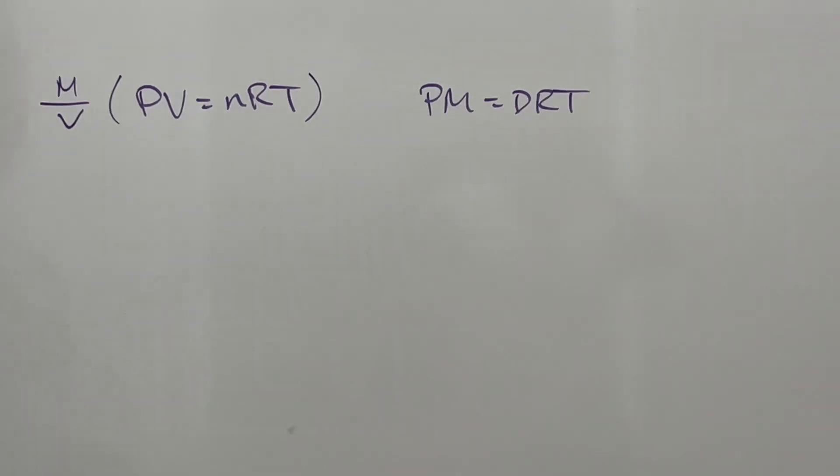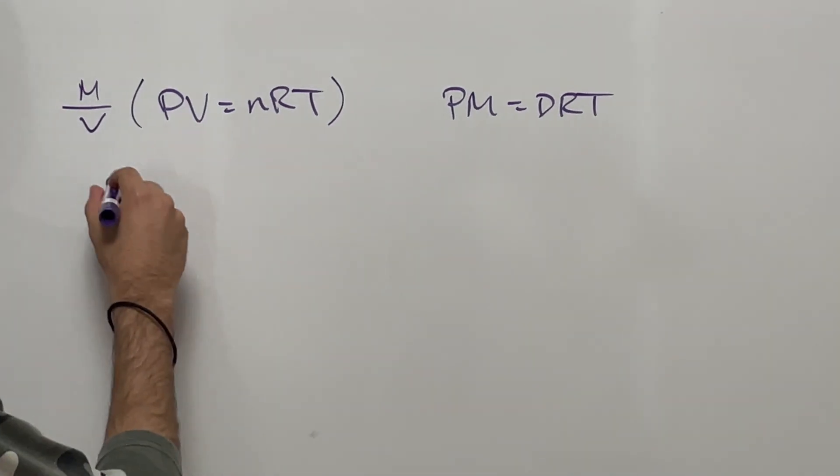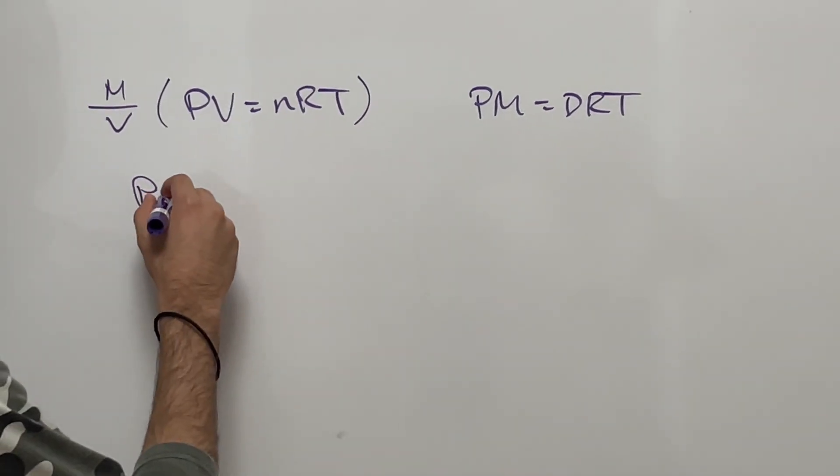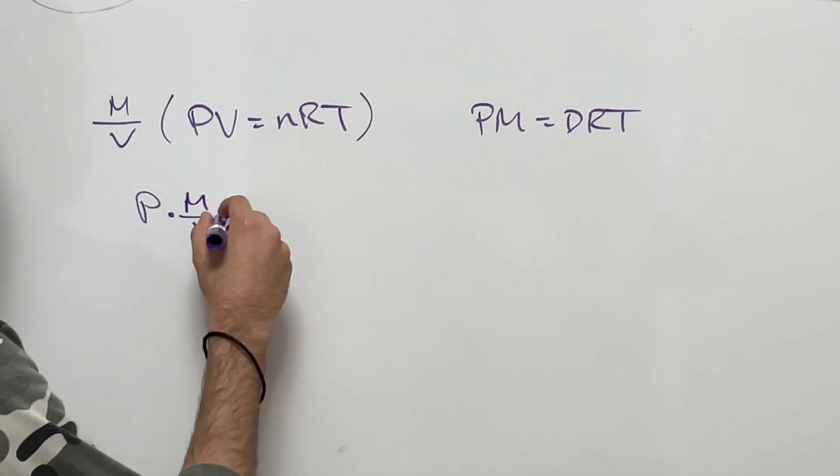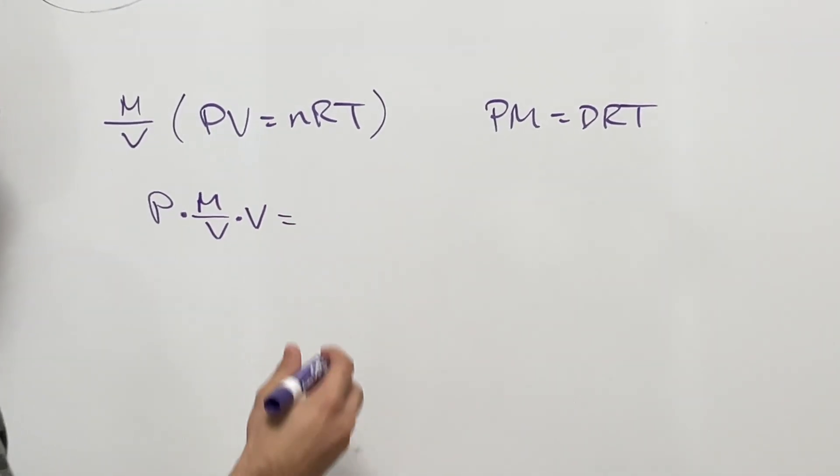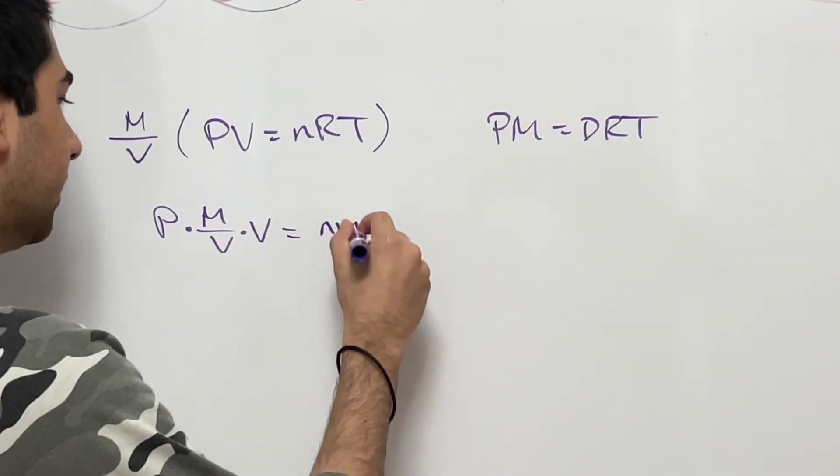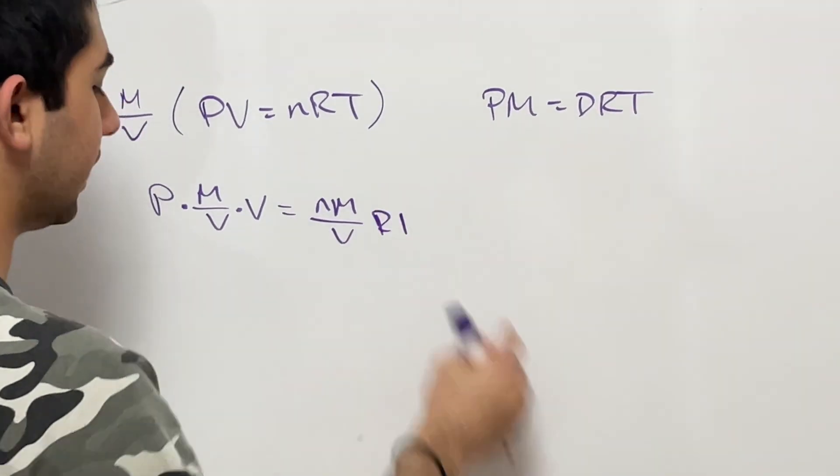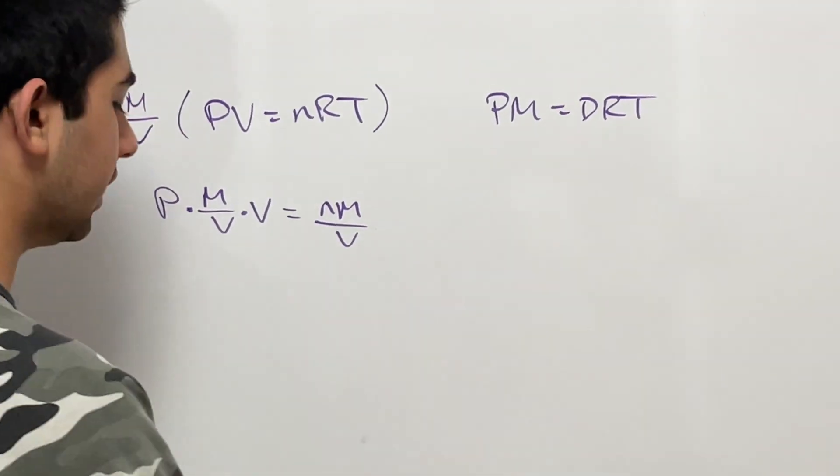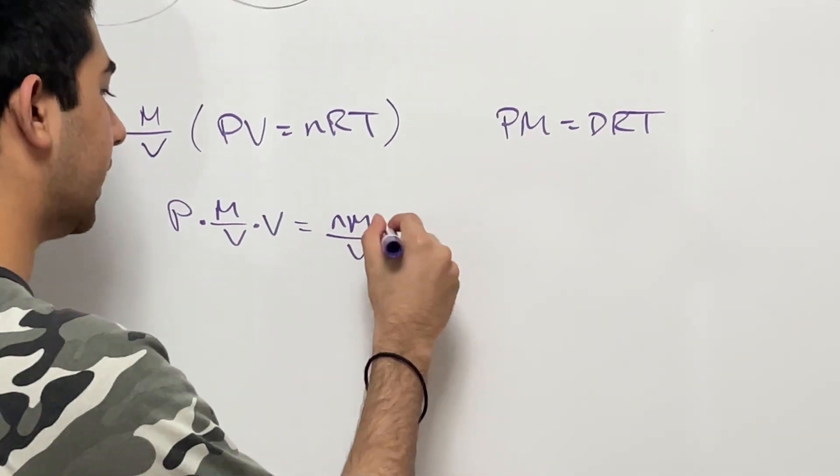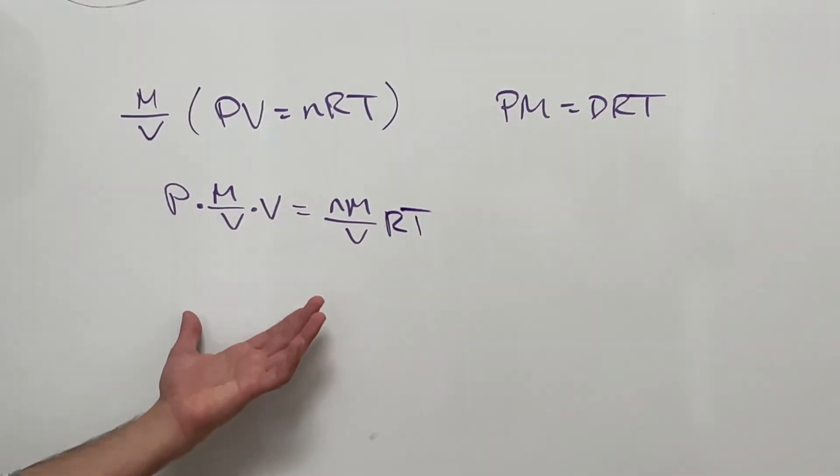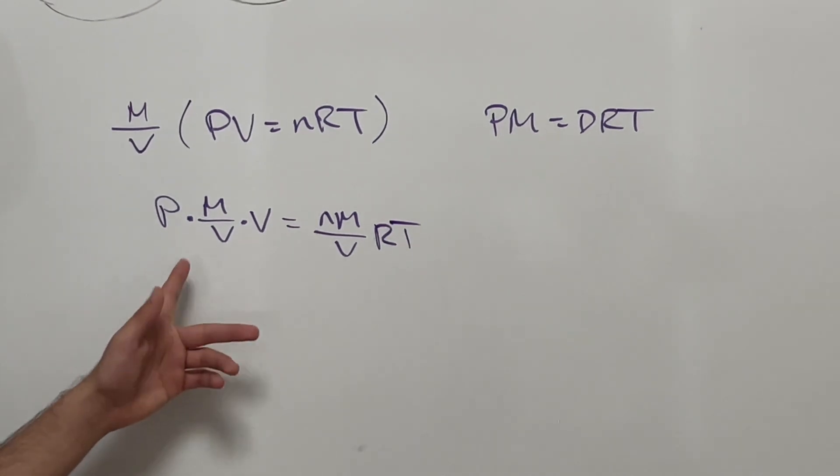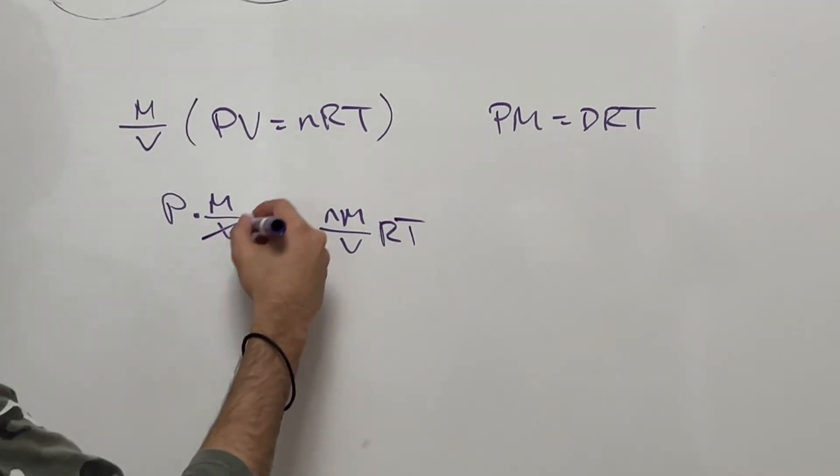So I'm going to multiply both sides by molar mass divided by volume, and I'll get P times M over V times V is equal to nM over V times RT. That wasn't a good R, I'll fix that.